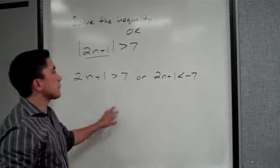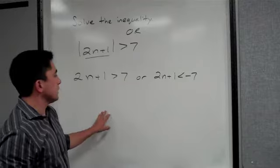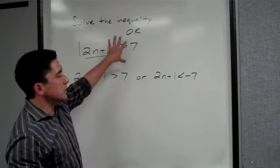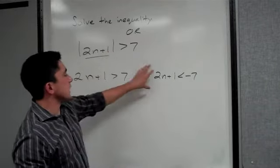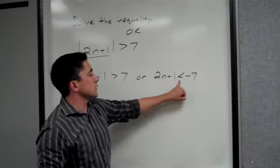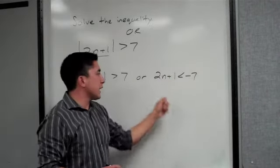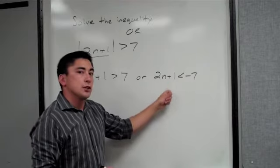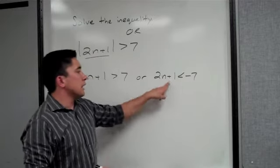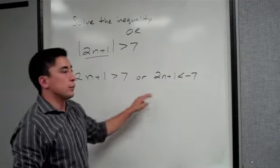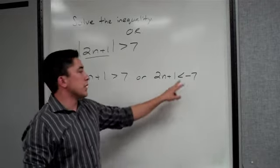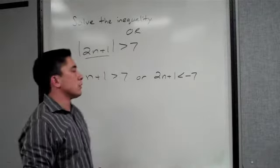So the way you set up every or inequality is that you set it up just the way it looks without the absolute value, then set it up again, just switch the direction of the symbol and make that a negative. Again, do not, do not, do not change this symbol. When you rewrite it, it's the number on the outside you change the symbol for.